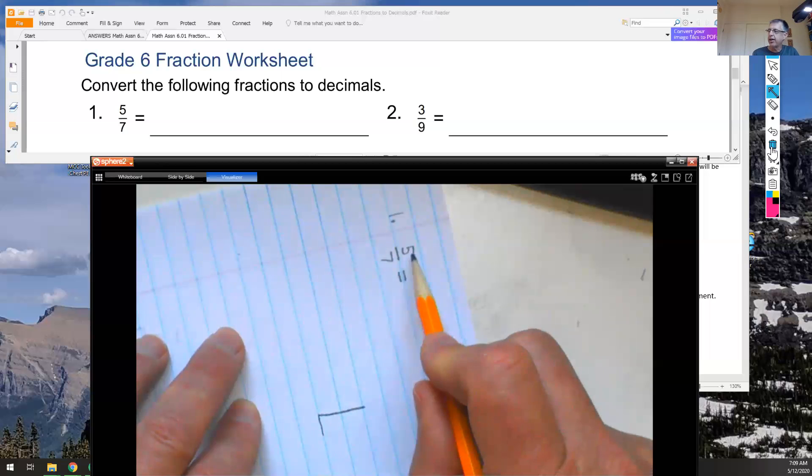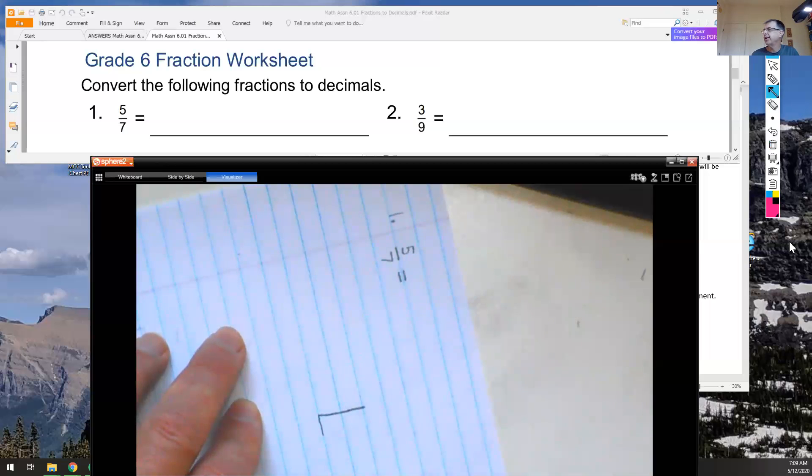My numerator is the number that's going to be going inside the dividing box. So I'm going to put the 5 inside my dividing box, and then I will take my denominator and put that as my divisor on the outside.